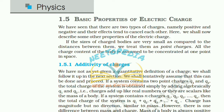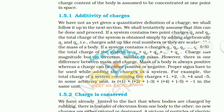1.5 Basic Properties of Electric Charge. There are two types of charges — positive and negative — and their effects tend to cancel each other. If the sizes of charged bodies are very small compared to the distance between them, we treat them as point objects and all the charge content is assumed to be concentrated at one point. 1.5.1 Additivity of Charges: If a system contains two point charges q1 and q2, the total charge is obtained by simply adding algebraically q1 and q2. Charges add up like real numbers — they are scalar, like the mass of a body.